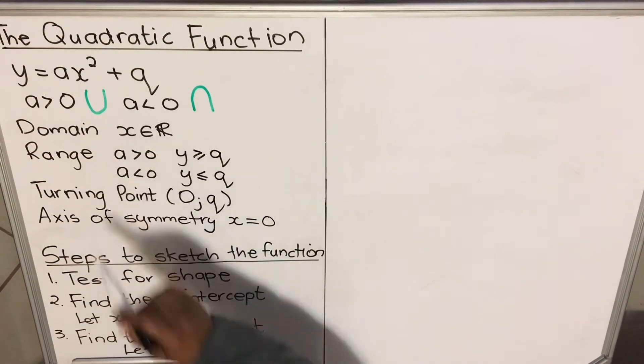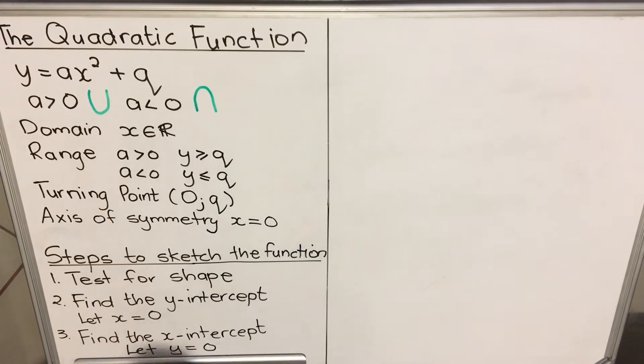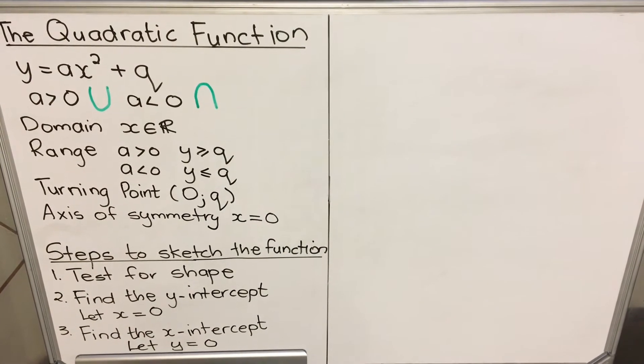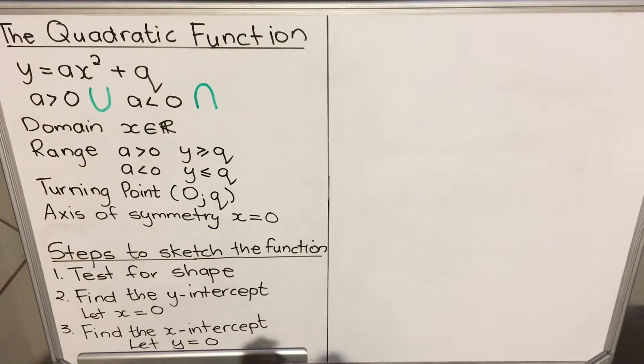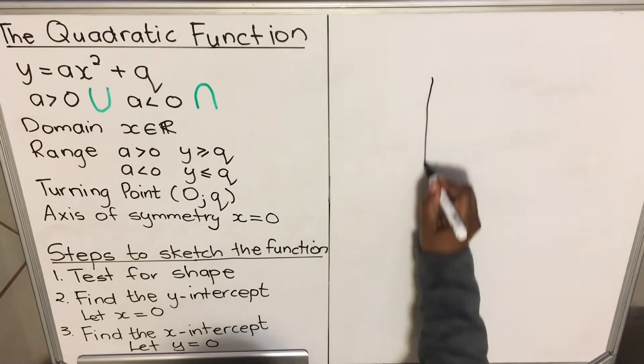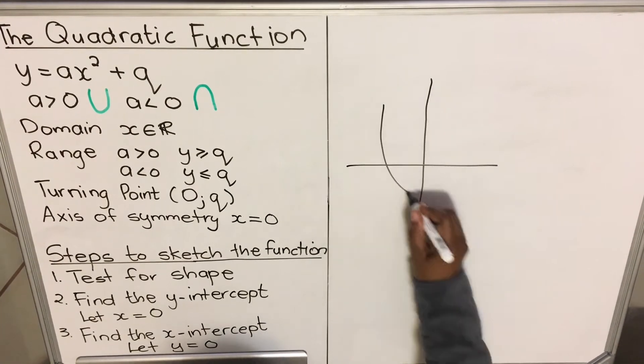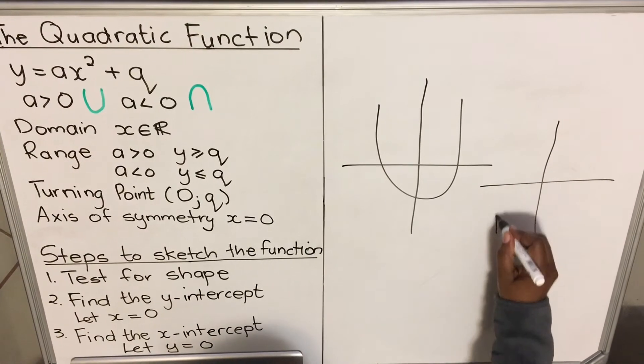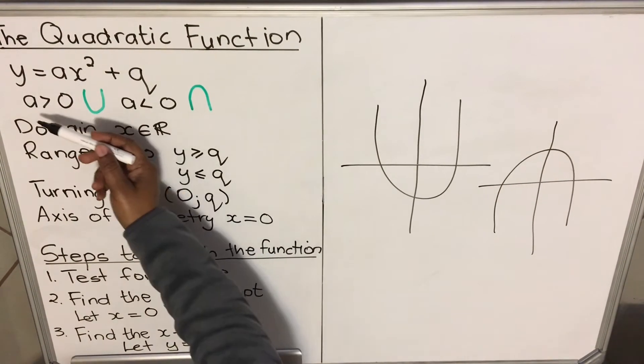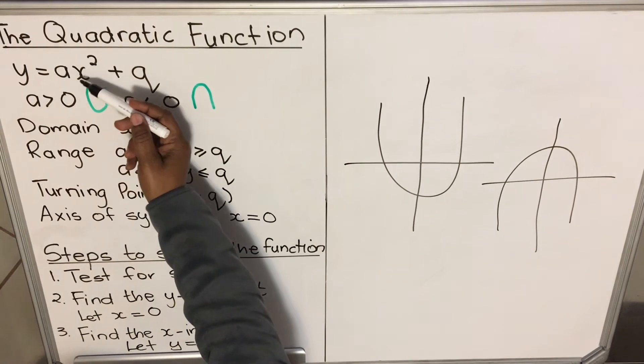Ax squared plus q. The q is the turning point. The shape of the function will look like this, either facing up or like that facing down. Now it depends on a—that number that goes with the x squared.